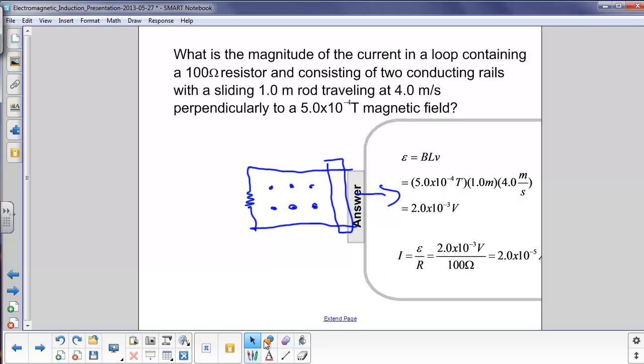Magnetic field is 5.0 times 10 to the minus 4th Tesla. The length, again, that's this distance here, is 1 meter. The velocity is 4 meters per second. We make the substitutions and we come up with the EMF is 2.0 times 10 to the minus 3 volts.